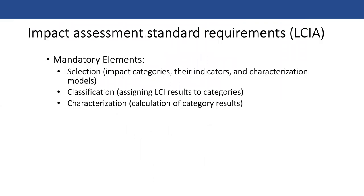The impact assessment requires selecting a particular impact category with which you can standardize everything. The indicators are all the different metrics — for example, if I want to assess greenhouse gas emissions, I can express everything in terms of CO2 equivalent. The indicators would be all the different types of pollutants: CO2, methane, etc. You classify the results into standard categories, then characterize them as part of the interpretation process, calculating impacts in the particular category you're choosing.